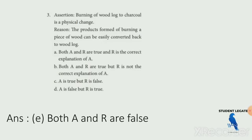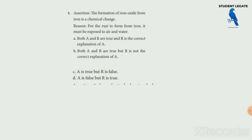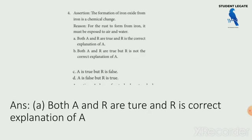If you have questions about chemical changes, option C is correct. The formation of iron oxide from iron is a chemical change. The reason is that rust forms from iron when it is exposed to air or water — that is the exact reason. So option A is right — both are correct and the reasoning is a correct explanation.